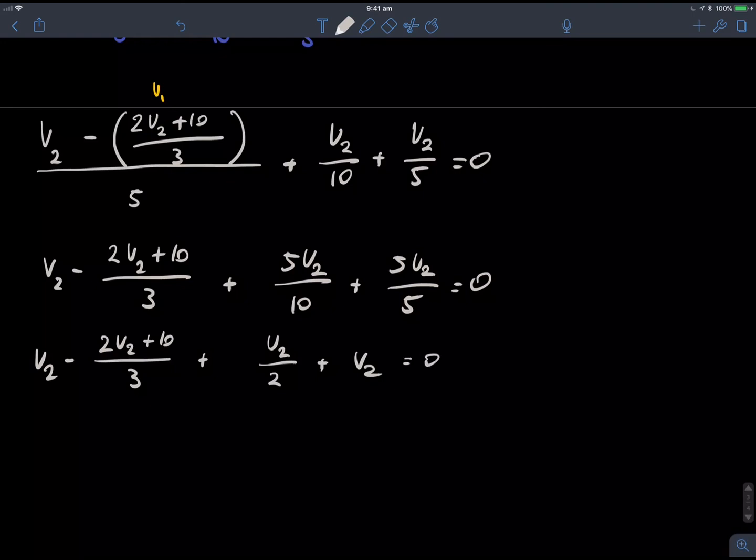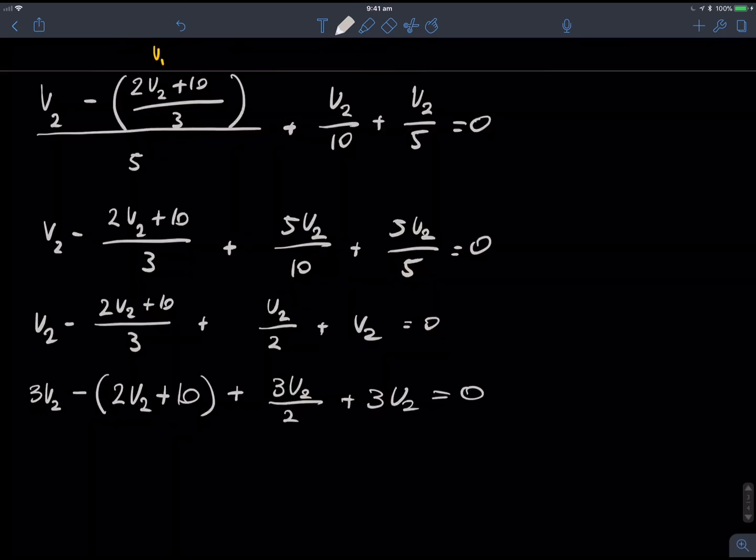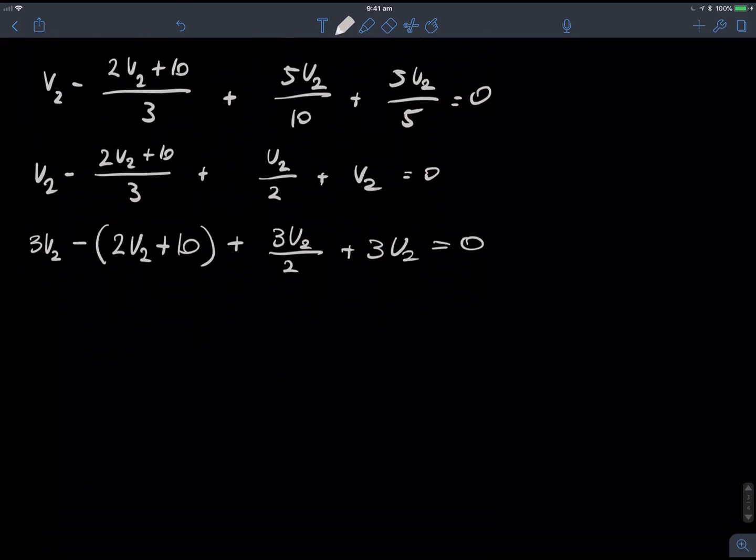Alright. Now, I'm going to times everything by 3 to get rid of that denominator. So, we'll get 3V2 minus 2V2. Make sure that goes in brackets. And 3V2 on 2 plus 3V2, all equal to 0.